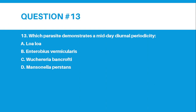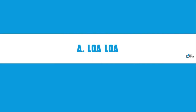Number 13. Which parasite demonstrates a midday diurnal periodicity? A, Loa loa; B, Enterobius vermicularis; C, Wuchereria bancrofti; or D, Mansonella perstans. And the correct answer for number 13 is letter A, Loa loa.